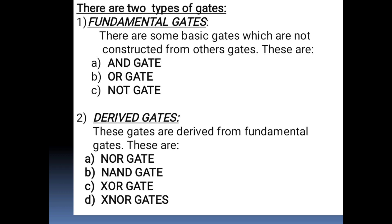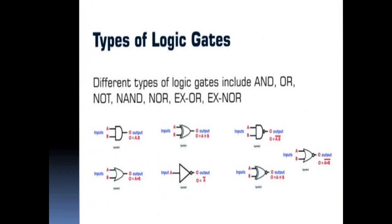The fundamental gates are the basic gates which are not constructed from the other gates. These are AND gate, OR gate, and NOT gate. The derived gates are the gates that are derived from the fundamental gates. These are NOR gate, NAND gate, XOR gate, and XNOR gate, in which NOR gate and NAND gate are also known as the universal gates.